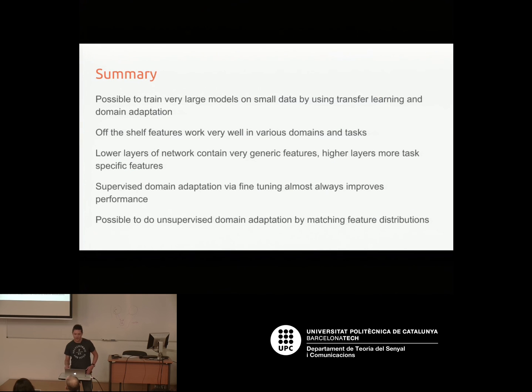In summary: it's possible to train very large models on small data using transfer learning. Off-the-shelf features work surprisingly well across many domains and tasks. Lower layers of the network contain quite generic features, whereas higher layers contain more task-specific features. Supervised domain adaptation via fine-tuning always improves performance if you have sufficient labels. And it's possible to do unsupervised domain adaptation to match feature distributions across domains.